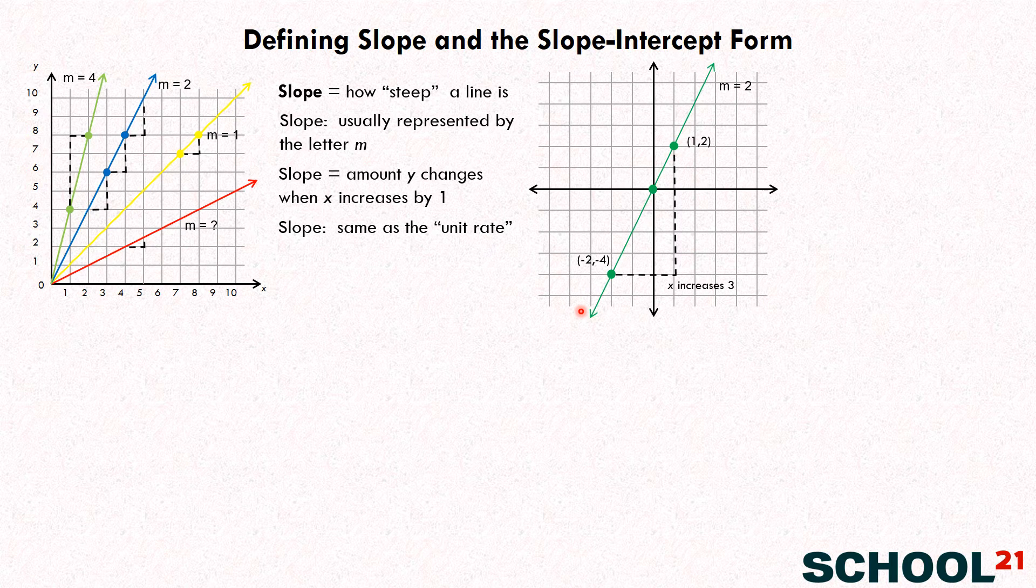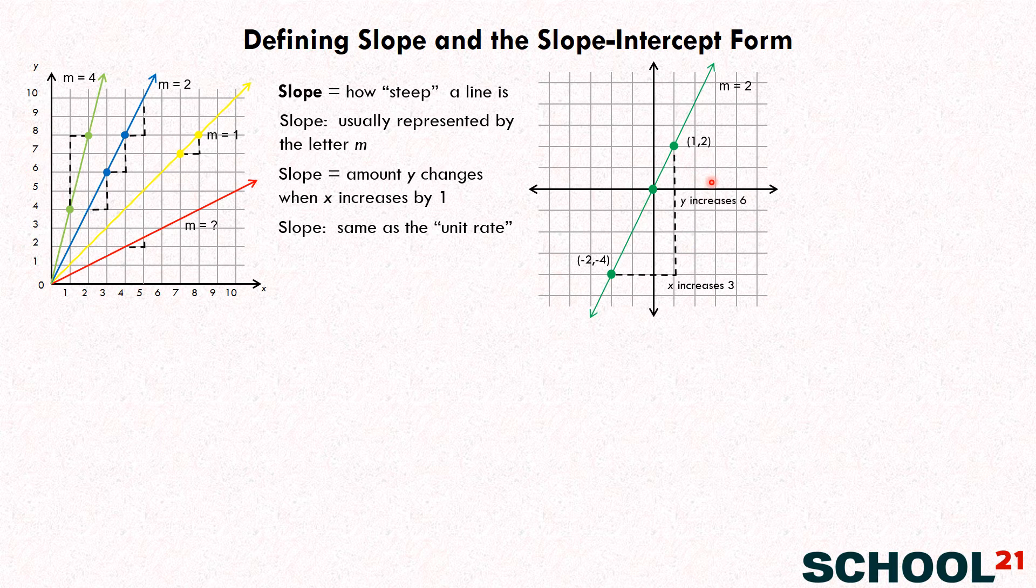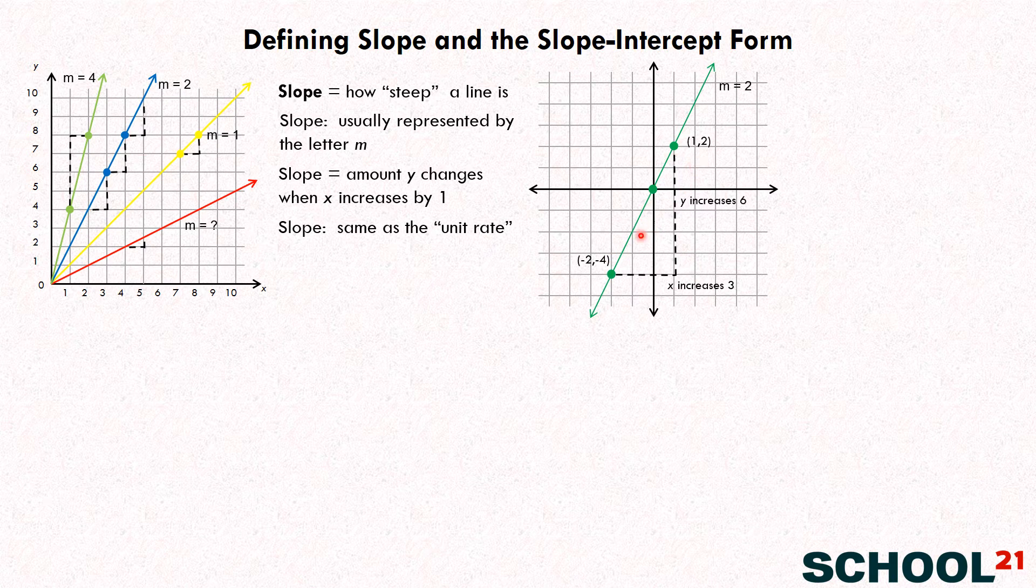Now we'll write in how much X increases. And then Y is changing from down here at negative four all the way up to two. How much is that going to be, that Y is increasing? Six. Six. Good. And you could have gotten that by counting all the steps, or you could have said, well, let's see. Two and negative four, those are six apart, because there's two here and four there. Two plus four is six.